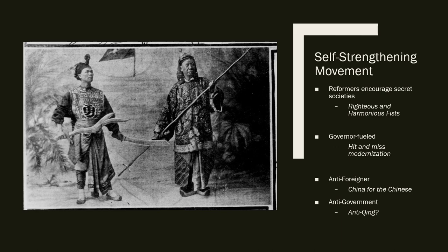This led to the Self-Strengthening Movement. By the 1890s, a neo-nationalist movement had emerged — the society calling itself the Righteous and Harmonious Fists. They were egalitarian: men learned kung fu and traditional martial arts, fighting with spears, swords, and farming implements. Women were also taught to fight, with female participants often referred to as the 'Red Lanterns,' who guided and directed battles.